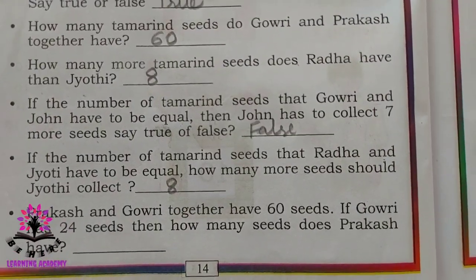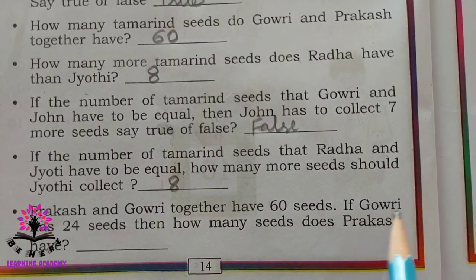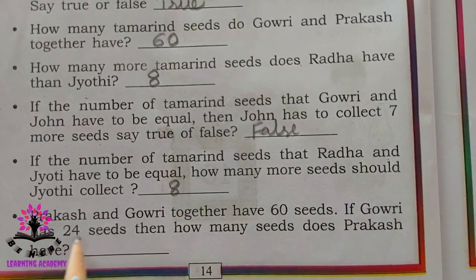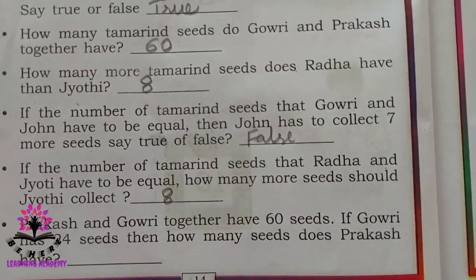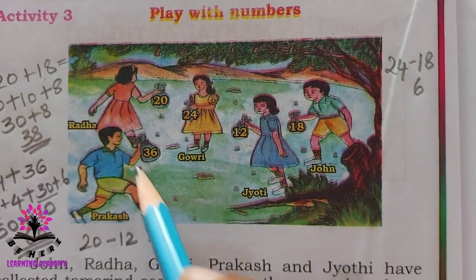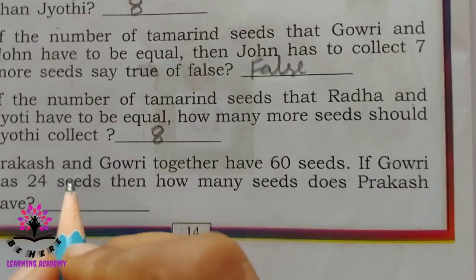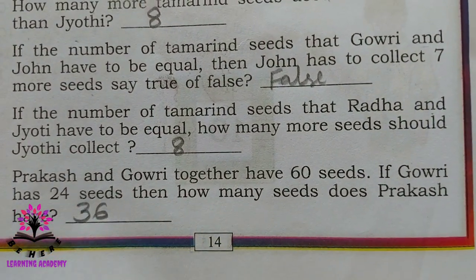Next question: Prakash and Gauri together have 60 seeds. If Gauri has 24, then how many seeds does Prakash have? Prakash has 36 seeds.